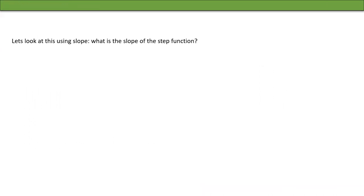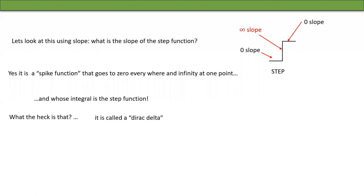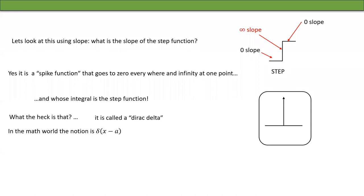Let's take another look using the idea of slope. What's the slope of a step function? The slope is zero on both sides, but at the jump the slope is infinity. So if you think about the slope that way, you get a spike. The integral of that spike has to give back the original function — derivative and integral must be inverses. This function is called a Dirac delta; it's not really a function. It's a spike, and only its integral makes sense — it blows up at one point but is zero everywhere else. The math notation is δ(x−a): an infinite spike centered at a.